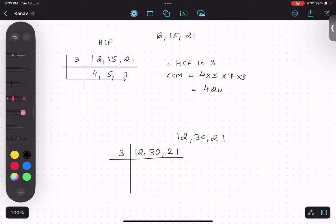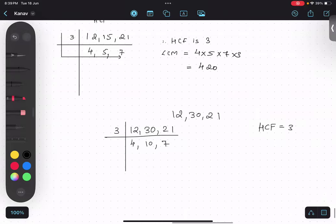4 and 10 and 7. Is there anything else common between 4, 10, and 7? No. No. So my HCF again would be 3.